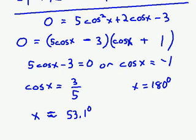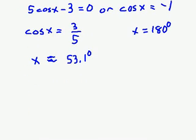But there's another quadrant in which the cosine is positive, and that's the fourth quadrant. To get the angle in the fourth quadrant whose reference angle is 53.1 degrees, take 360 minus 53.1. You'll get 306.9.